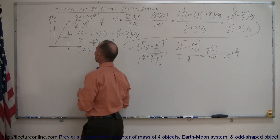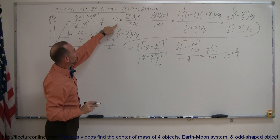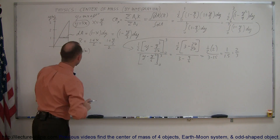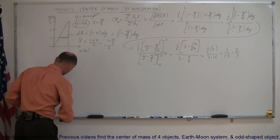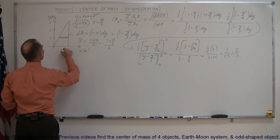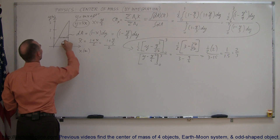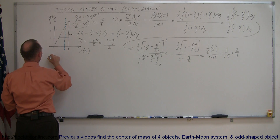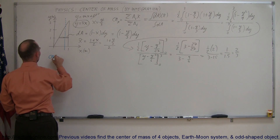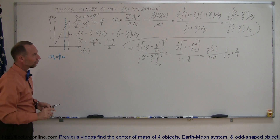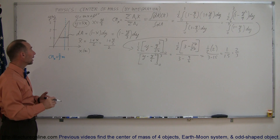So that means that the x-coordinate of the center mass is 2 thirds. I'll use a blue color — in the x direction, 2 thirds is right here. Somewhere along this line is the x-coordinate of my object. So x center mass in the x-direction is equal to 2 thirds of a meter. Now we have to do exactly the same thing, but now for the y direction.